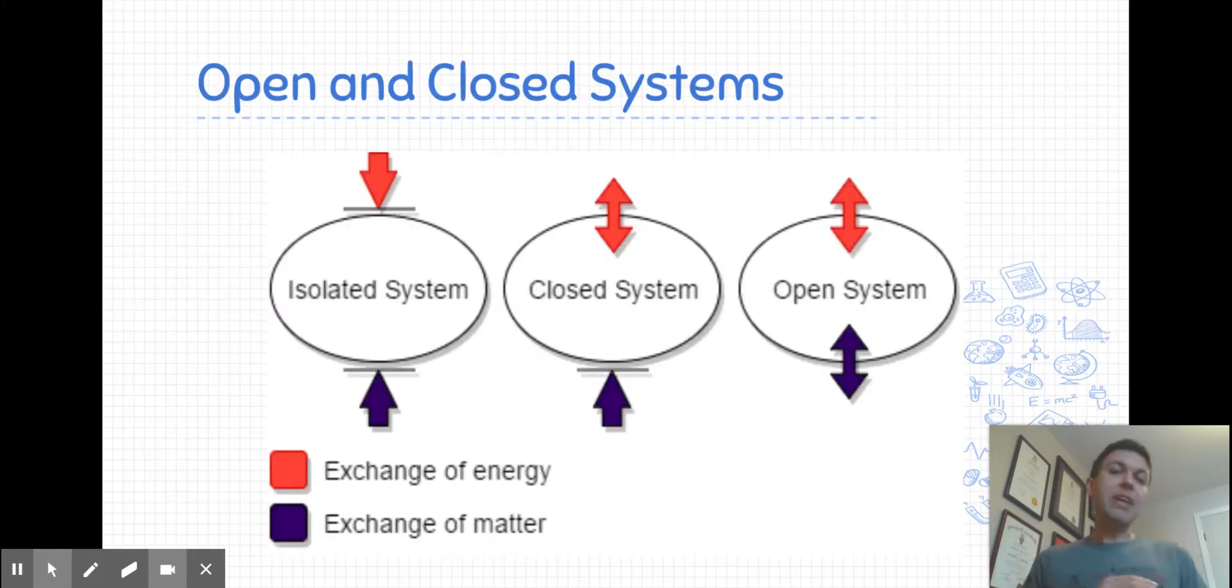When we have chemical systems that are usually undergoing a chemical change, that's usually what we're interested in here. There are three types that we can have. The first type, and I'll start from the right here, is an open system.